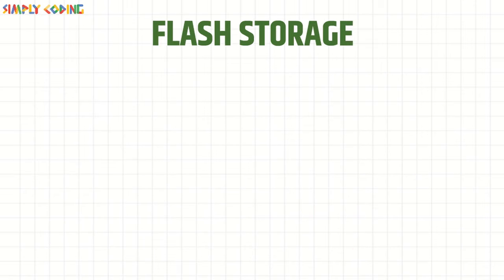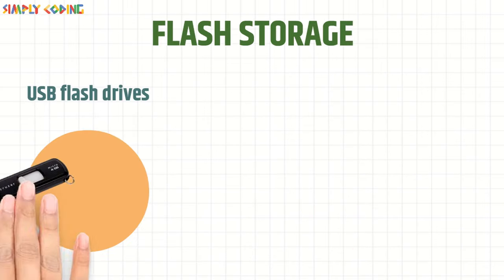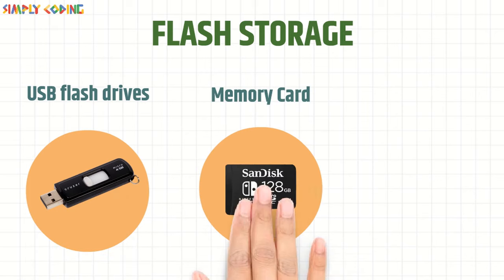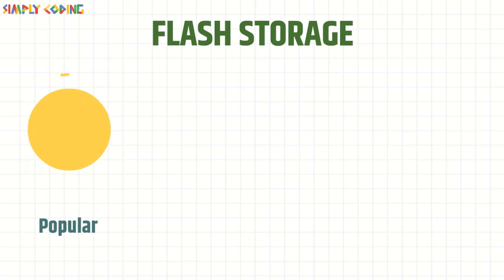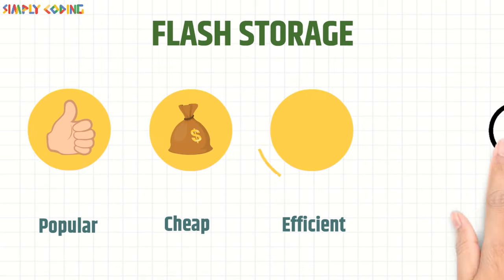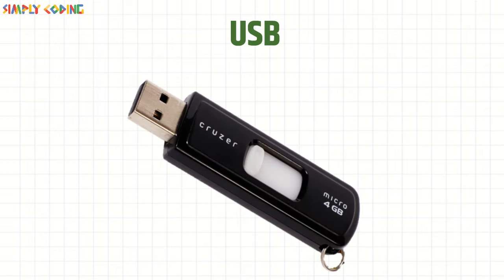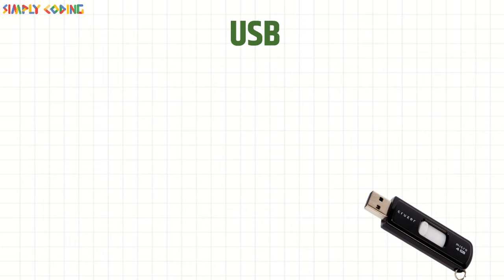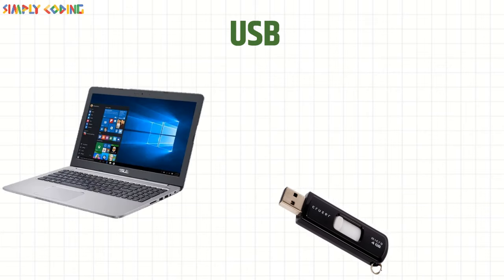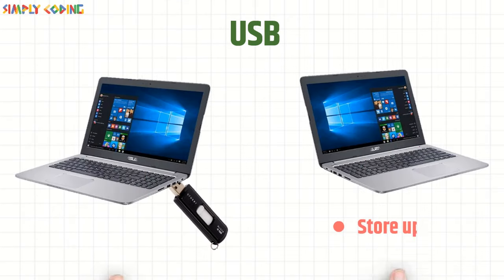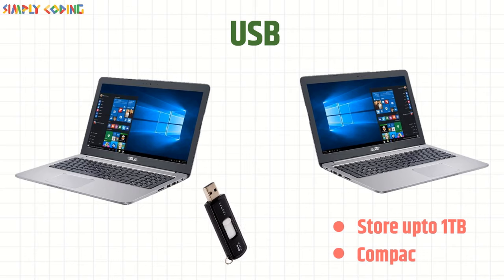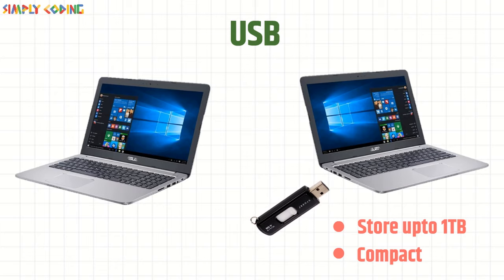Now we will cover flash storage devices. They include USB flash drives, memory cards or SD cards, etc. They have become very popular as they are a cheaper, efficient, and reliable solution. A USB flash drive or pen drive is a portable memory storage device the size of a human thumb, which connects to a computer via a USB port. It can store data up to 1 TB. It is compact, fast, and convenient, so it is typically used to store and transfer files.